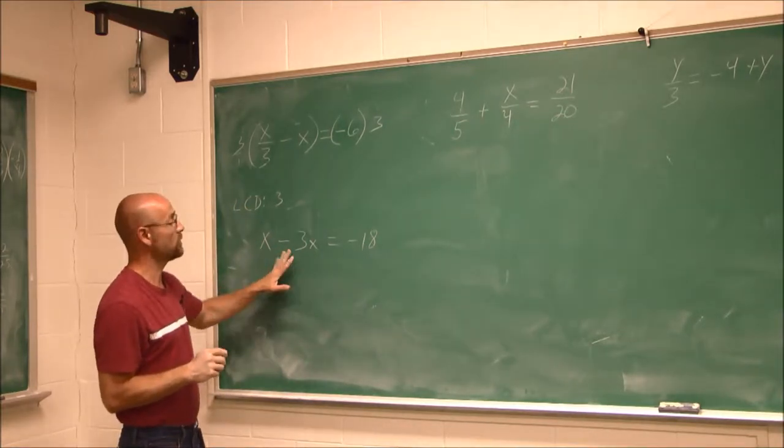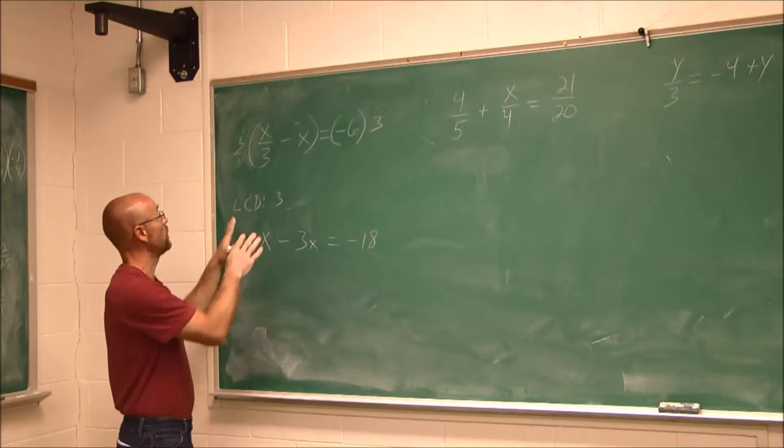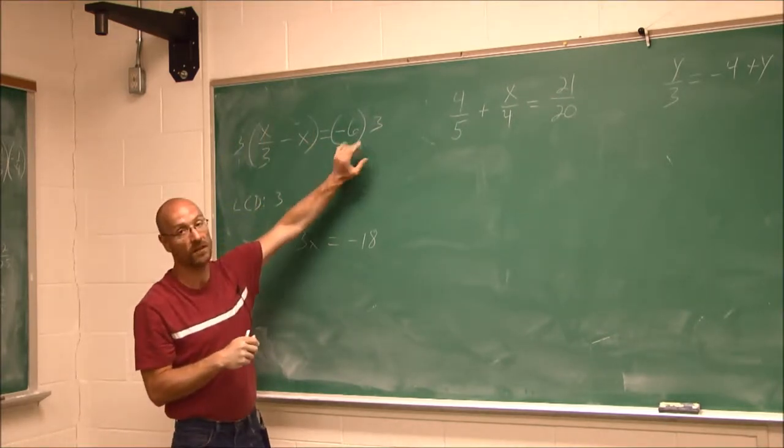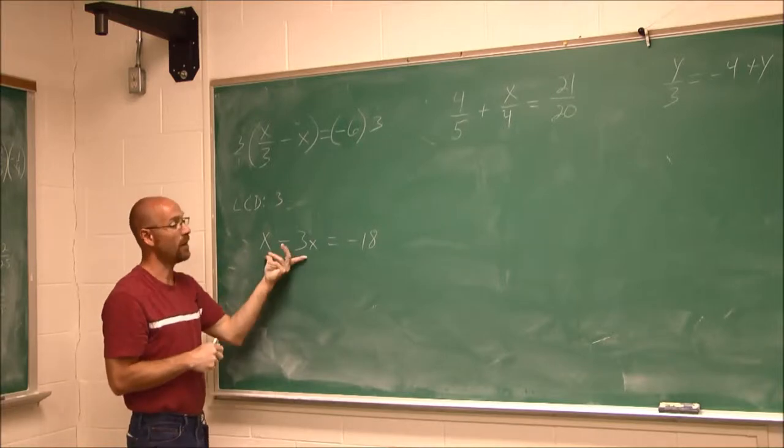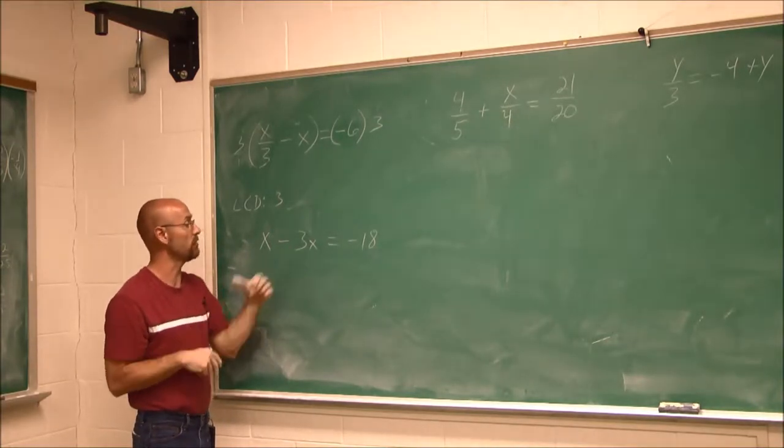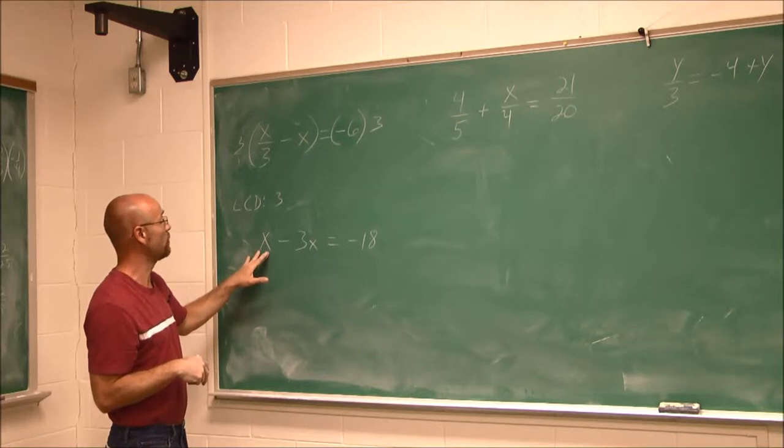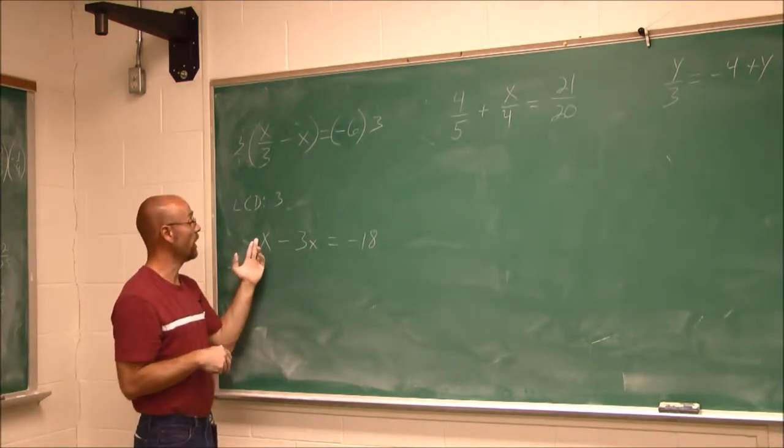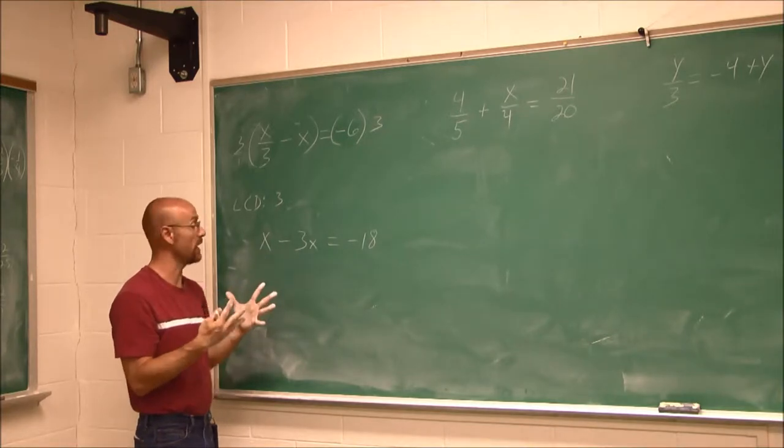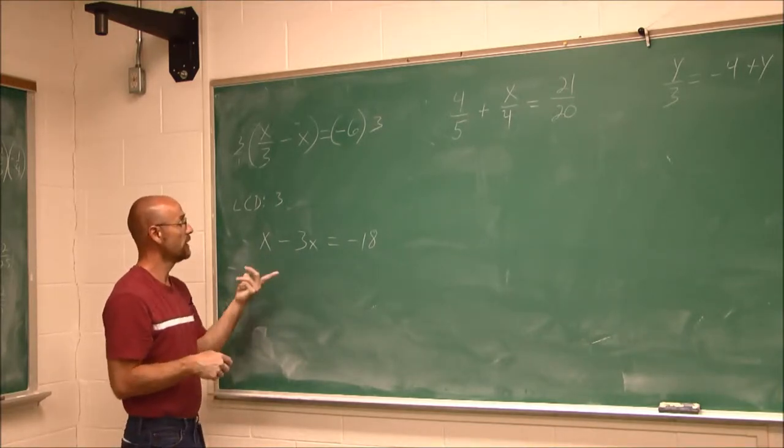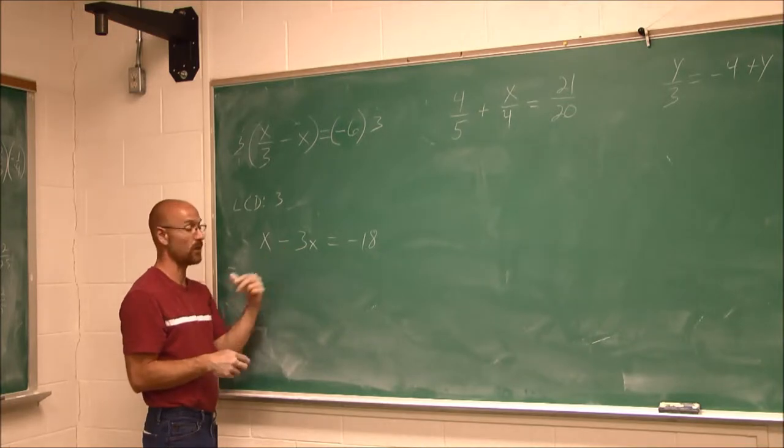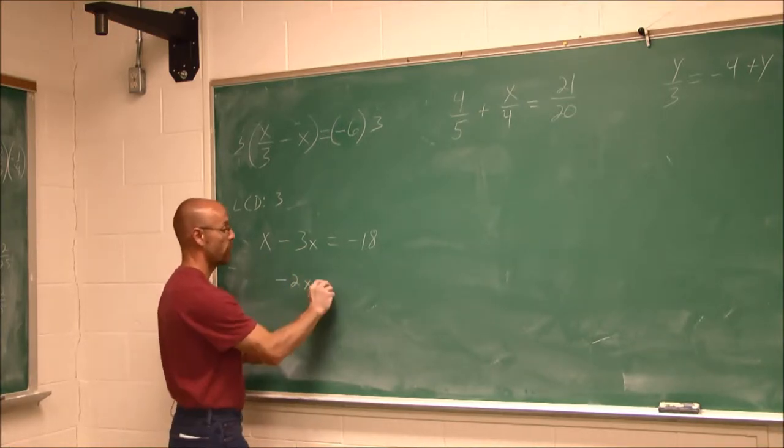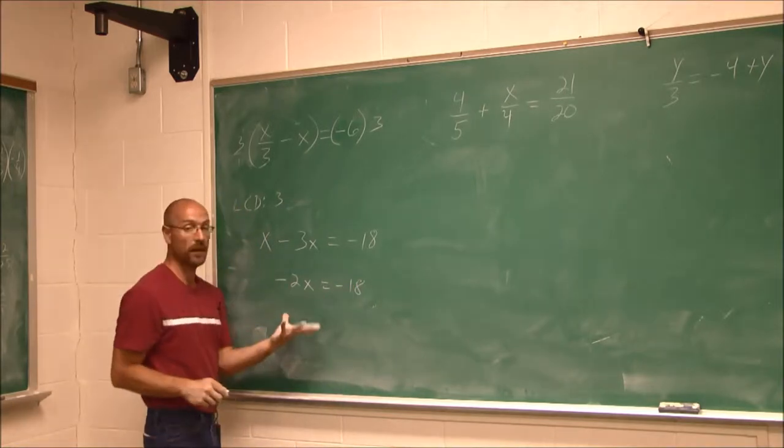And now what we have to do is combine like terms. So step one was determine the LCD. Step two was multiply both sides by that LCD. Now we just need to simplify and solve as we have always done. We have 1x, and we're going to take away 3x's. So 1 minus 3 different signs. We're going to find their difference. The difference of 1 and 3 is 2. 3 is larger than 1, so it maintains that negative.